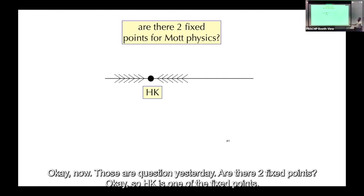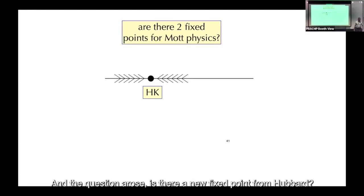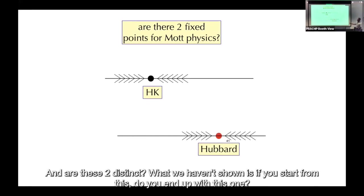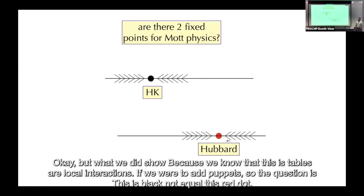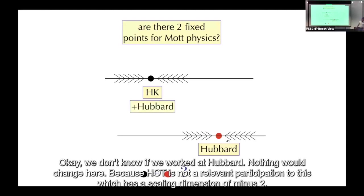A question arose yesterday: are there two fixed points? HK is one fixed point — is there a new fixed point from Hubbard, and are they distinct? We haven't shown that starting from Hubbard you end up at the HK fixed point. But we do know that HK is stable to local interactions, and Hubbard is not a relevant perturbation to HK since HK has scaling dimension minus two.